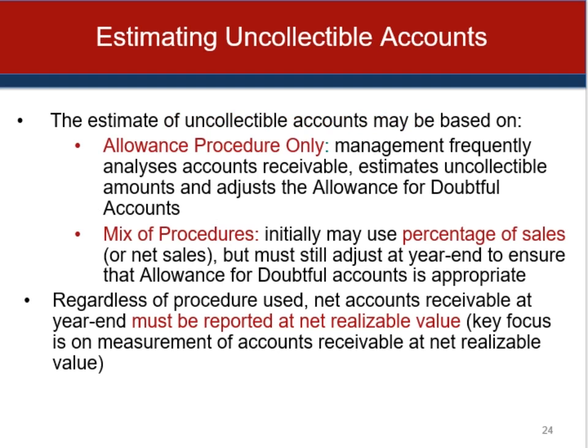There are two accounting procedures when employing the allowance method, both resulting in the same ending balances. The first is the allowance procedure only: at month-end, management estimates uncollectible accounts by analyzing accounts receivable balances and adjusts the allowance account to reflect estimated uncollectibles. The second is a mix of procedures: at month-end, management estimates bad debt expense using a percentage of sales method. If there's a stable relationship between credit sales and bad debts, that percentage is applied to current period sales. At year-end when financial statements are issued, the percentage of receivables approach is applied to ensure accounts receivable are accurately reported at net realizable value.